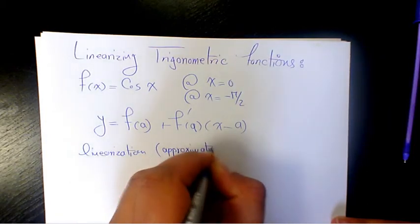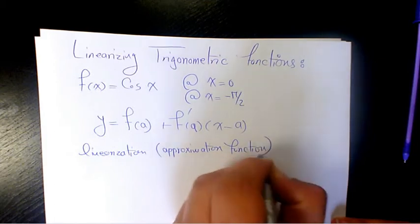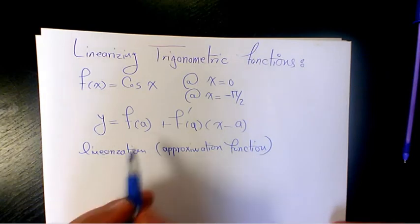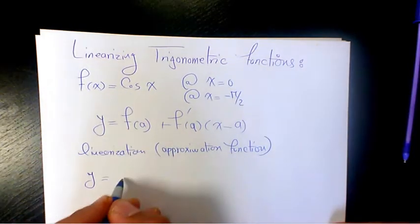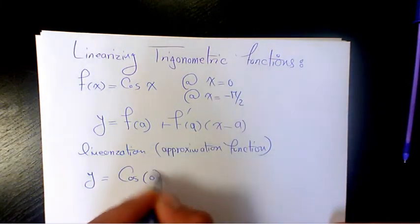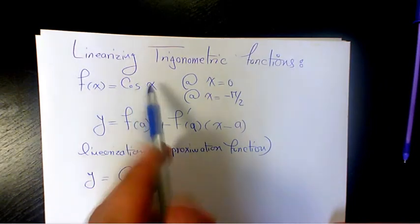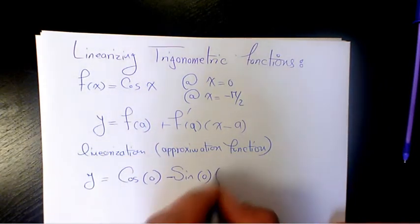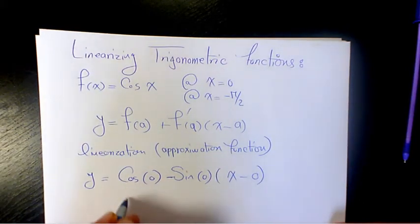Function, so we approximate complicated function to a linear function. So f of a is going to be cosine of 0 at this point, plus the derivative of f of x is going to be negative sine, so it's going to be negative sine 0 times x minus a. A is 0, so it's going to be cosine 0 is 1 minus sine 0 is 0 times x minus 0.